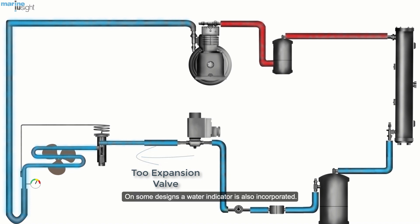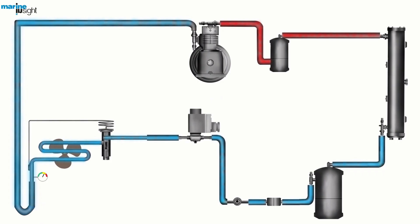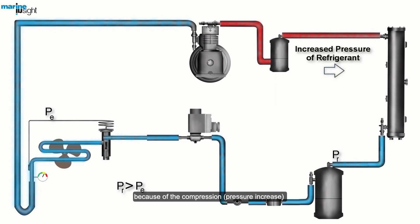Expansion device. Pressure in the receiver is much higher than the pressure in the evaporator because of the compressor that has occurred prior to condenser.